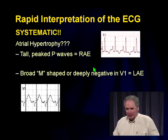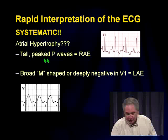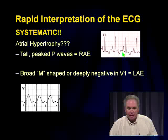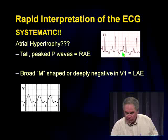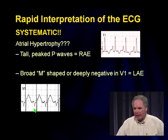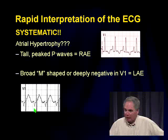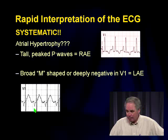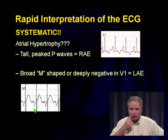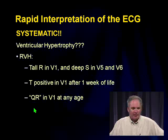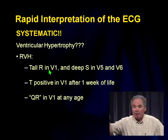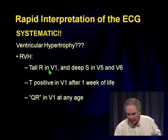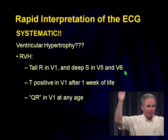After rate, rhythm, and axis, I look for atrial hypertrophy. For right atrial hypertrophy, look for tall peaked P waves. For left atrial enlargement, look for deeply broadly negative P waves in V1, or a broad M-shaped P wave in any lead. For ventricular hypertrophy: tall R waves — big positive deflections — in V1 or V2 indicate right ventricular hypertrophy, often accompanied by deep S waves in V5 and V6.